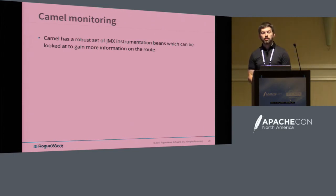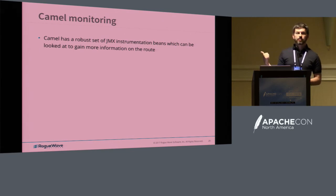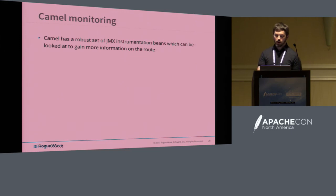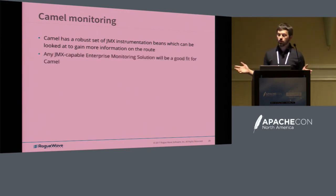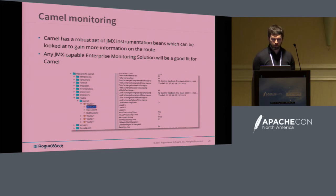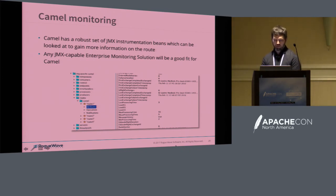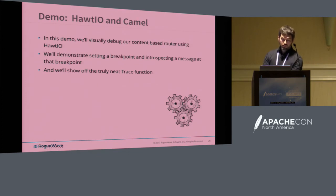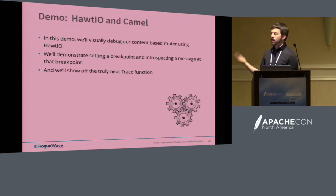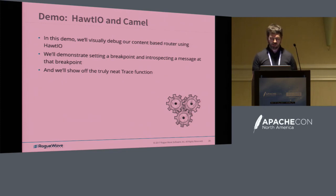Camel monitoring: Camel has a bunch of JMX instrumentation beans that can be looked at to gain more information on the route. As you can see in HawtIO, it tracks things like latency, maximum time, minimum time, and average time on how your routes are doing. Any JMX-capable enterprise monitoring solution is a good fit. Here's an example using JVisualVM looking into the different statistics available for each route.